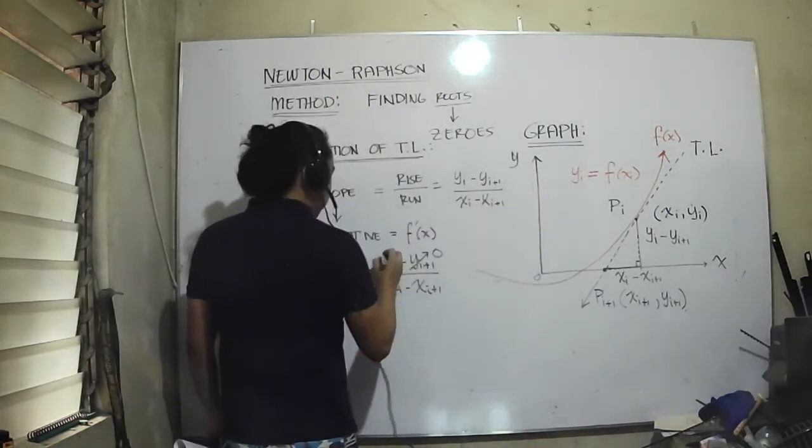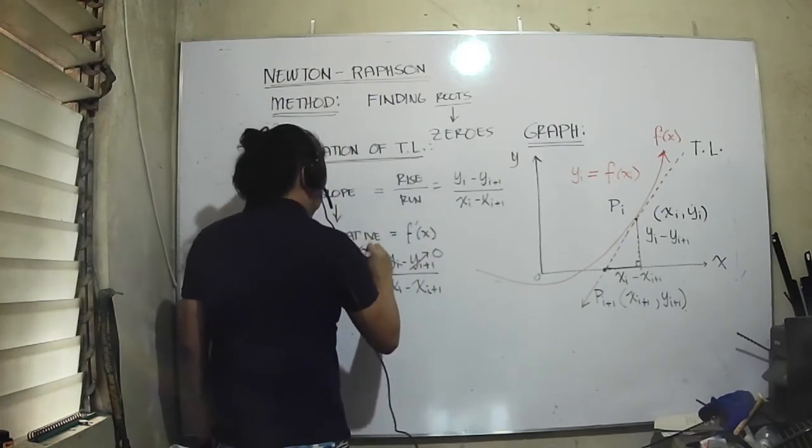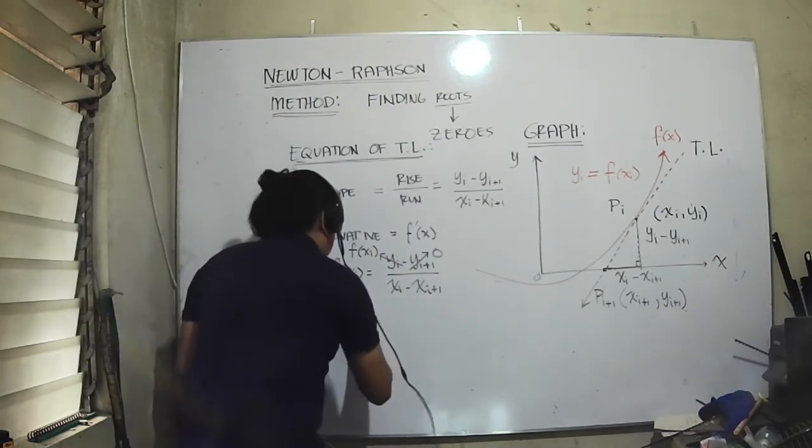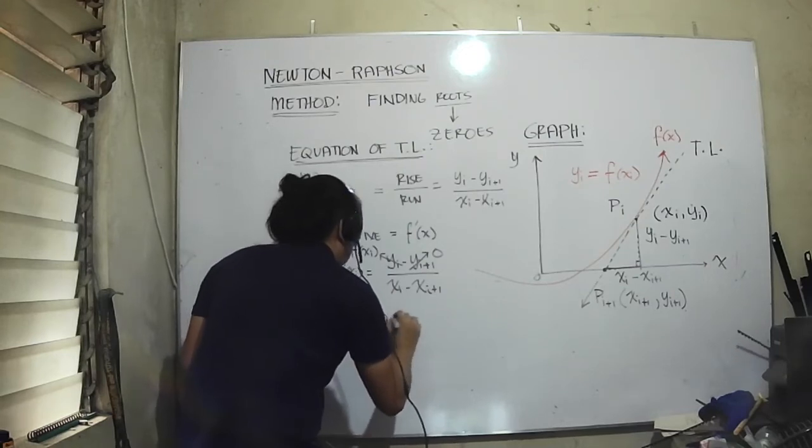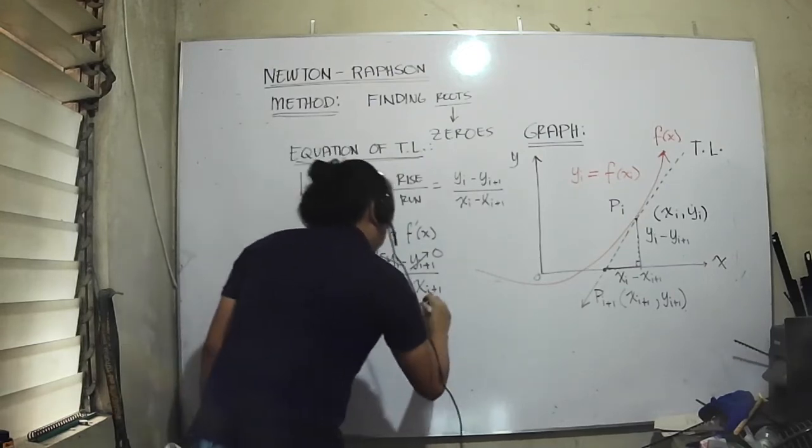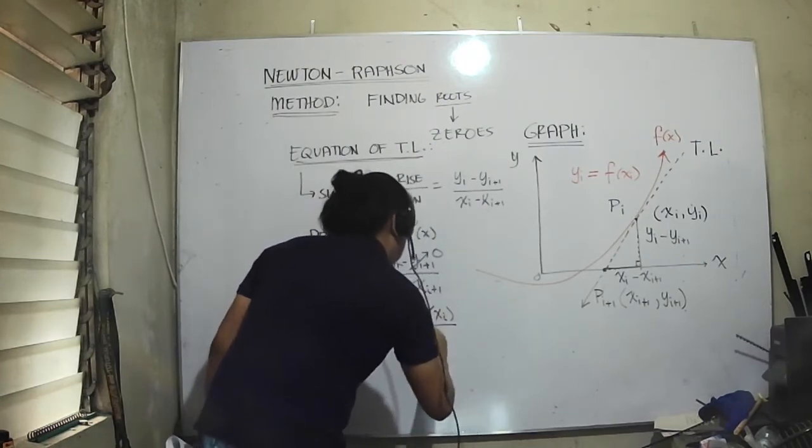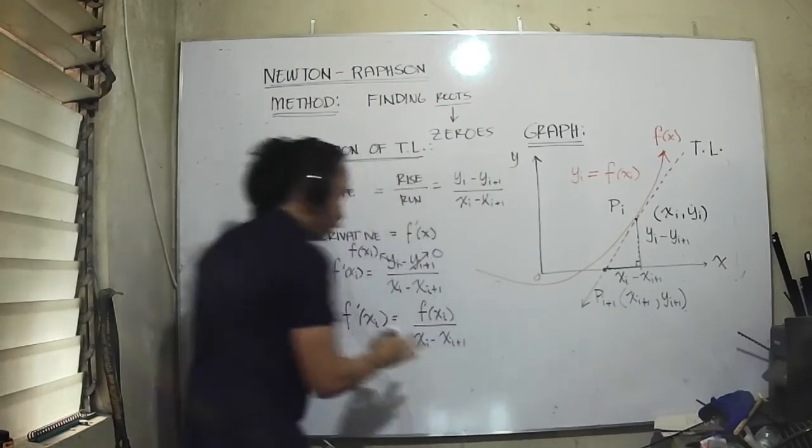So yi is also equal to f of xi. We arrive at this expression, and that would be equal to f of xi divided by f prime of xi, which equals xi minus xi+1.